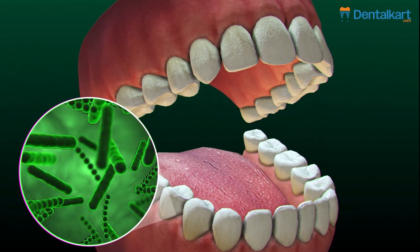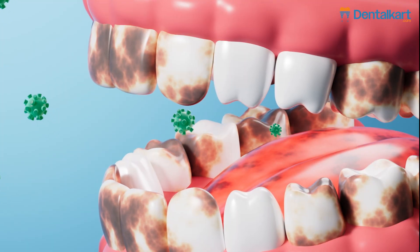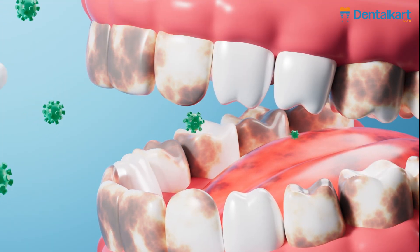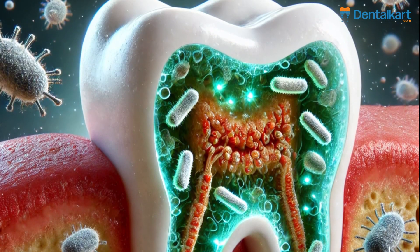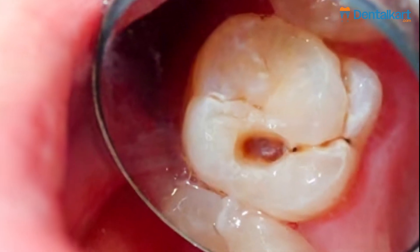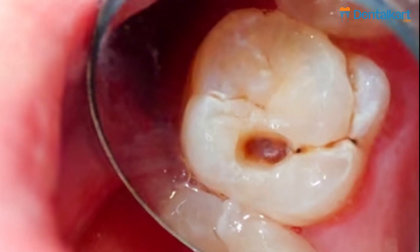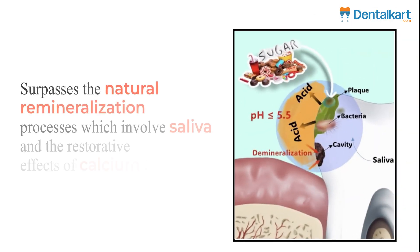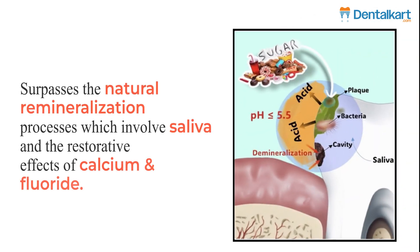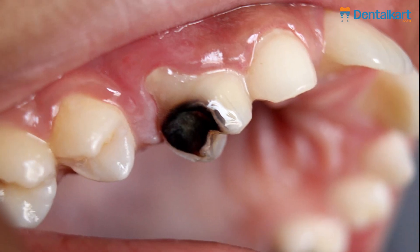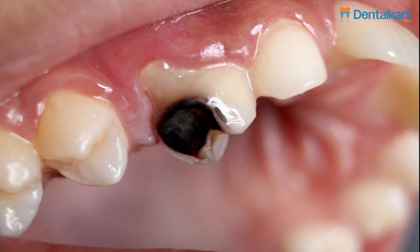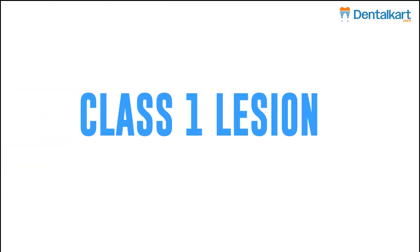This condition arises when bacteria ferment food particles left on the tooth surface, producing acids that demineralize these tissues. If the rate of demineralization surpasses the natural remineralization processes, which involve saliva and the restorative effects of calcium and fluoride from toothpaste, the enamel progressively deteriorates, resulting in dental caries.